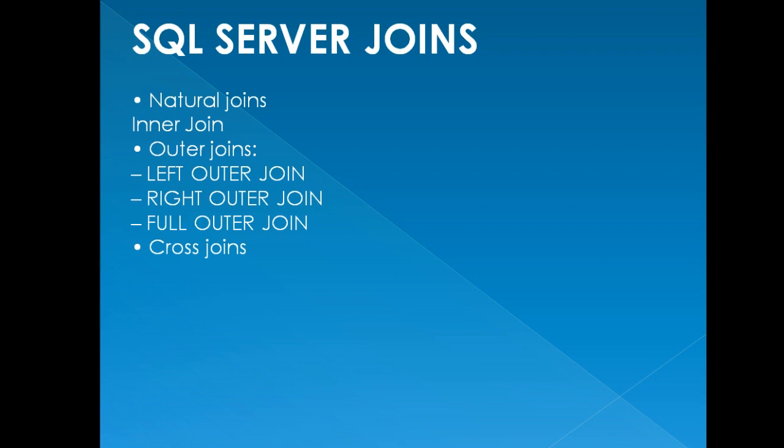Today our topic of discussion is SQL Server joins. Under SQL Server joins we have natural join, inner join, outer join — and outer join has a different set of joins under it: left outer join, right outer join, and full outer join. Last but not least, we have cross join. These are all the joins we're going to discuss under SQL Server joins.